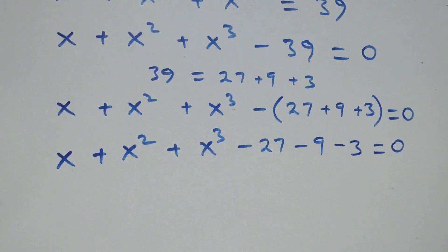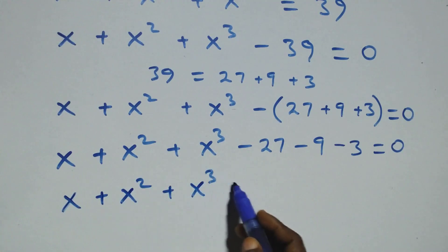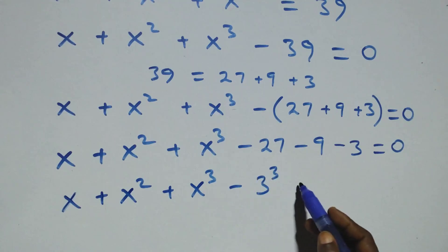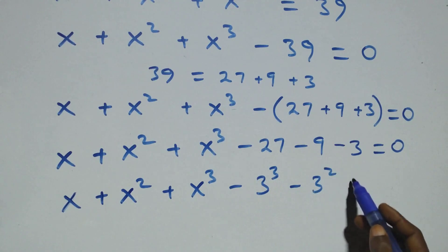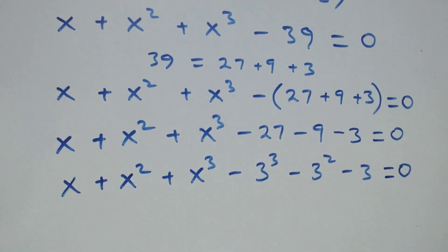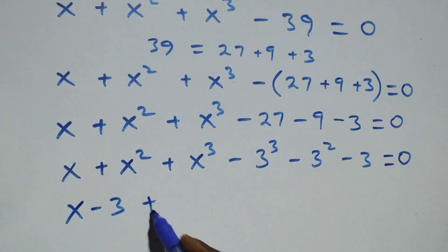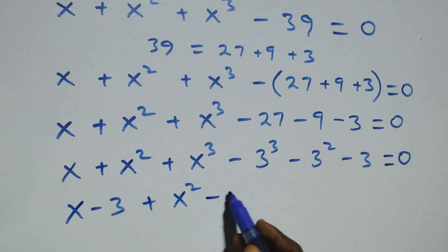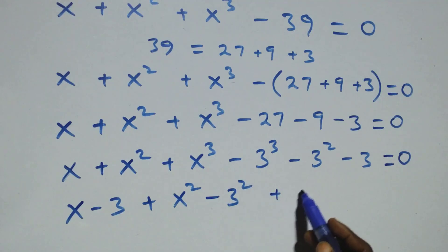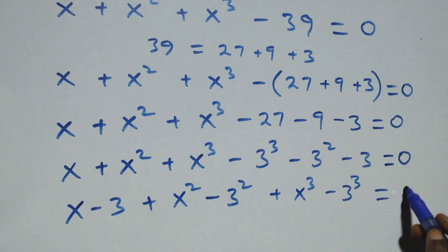Then here, when we rearrange, we have x minus 3, then plus x squared minus 3 squared, also we have plus x cubed minus 3 cubed, then equals to 0 here.